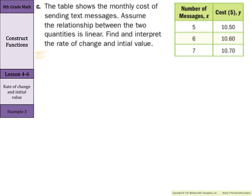The table shows the monthly cost of sending text messages. Assume the relationship between the two quantities is linear. Find and interpret the rate of change and initial value. Let's start with our rate of change. You can pick any two points from this table. Let's pick the two smaller ones. Let's pick 5 is our x, $10.50 is our y.